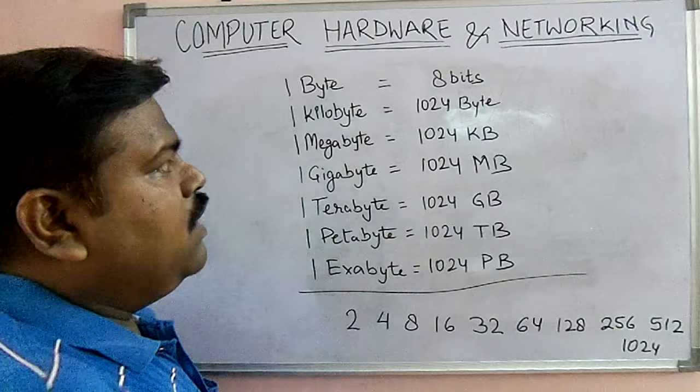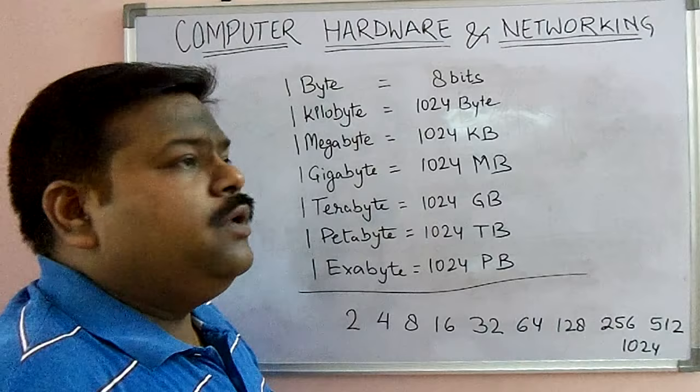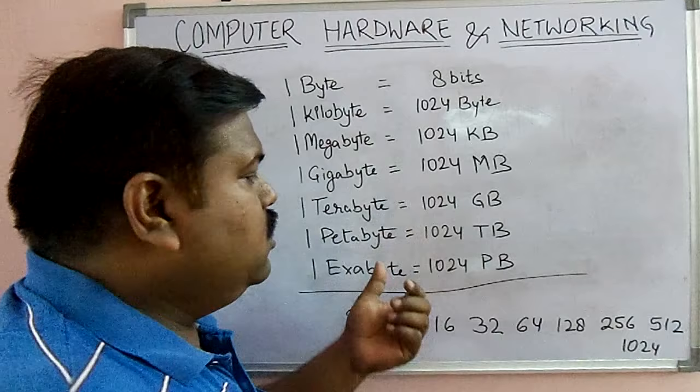Now I want to explain why this value is 1024, while we generally use 1 kilo equal to 1000. Why is it 1024? Because we generally use the decimal number system, but here all these units are based on the binary number system.